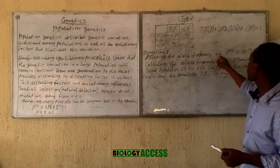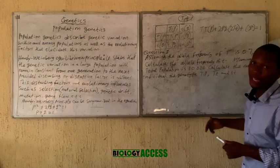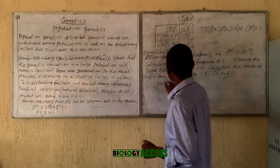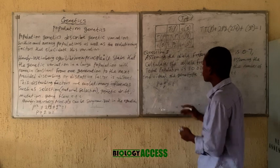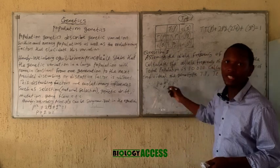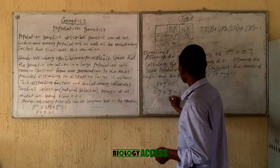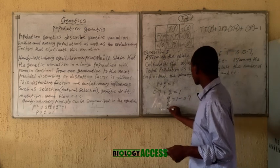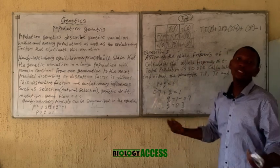Let's take a simple example. Assume that the allele frequency of T is 0.7. Calculate the allele frequency of the recessive gene t. From the equation we know that p + q = 1. If p = 0.7, then 0.7 + q = 1, so q = 1 − 0.7 = 0.3.